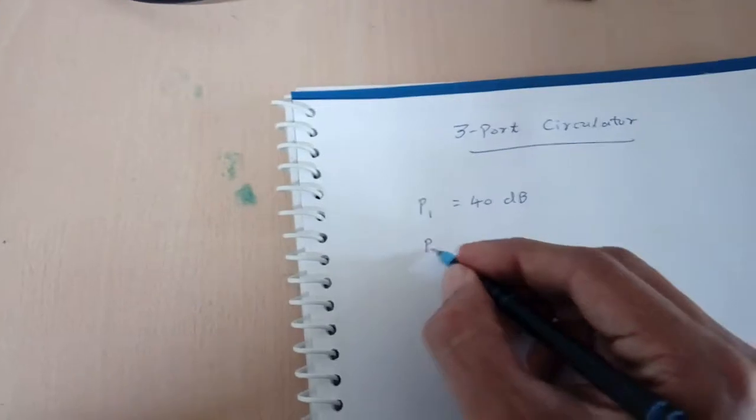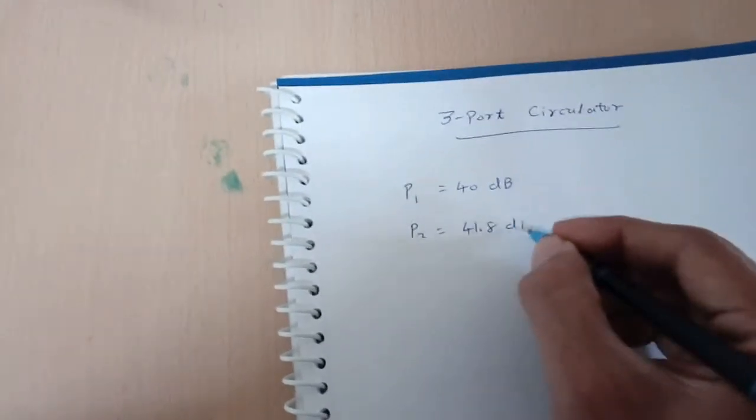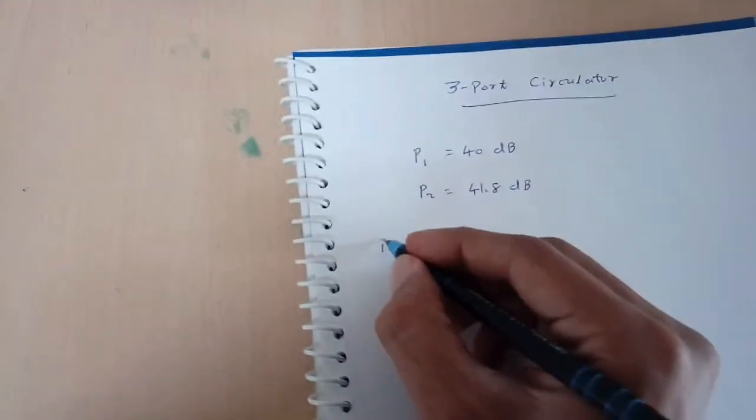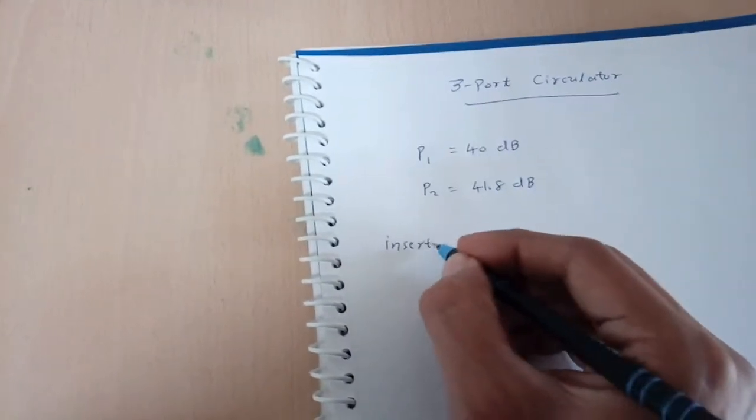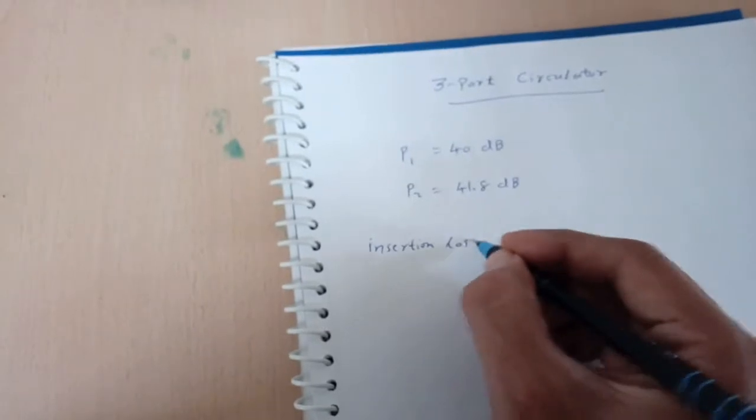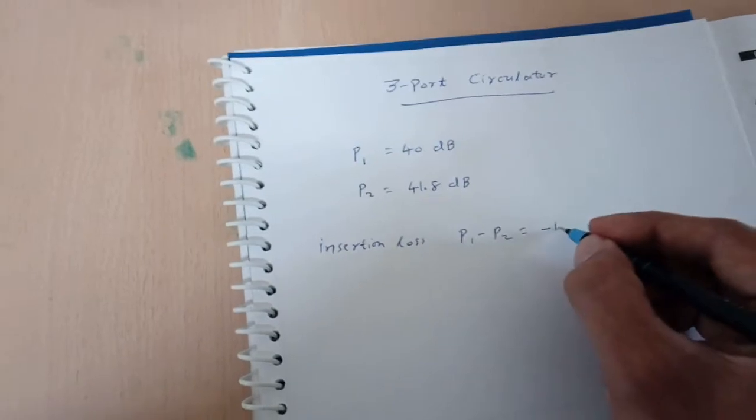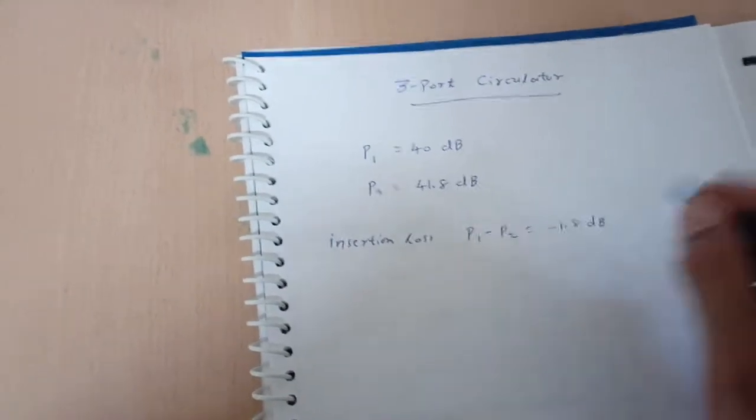So our reference input at port 1 was 40 dB. At port 2 we are getting 41.8 dB. So insertion loss we can say P1 minus P2 that is minus 1.8 dB.